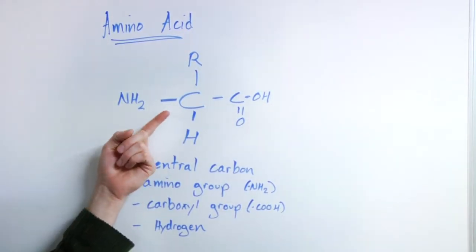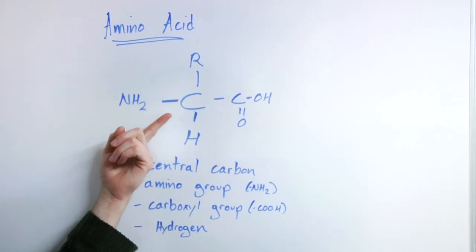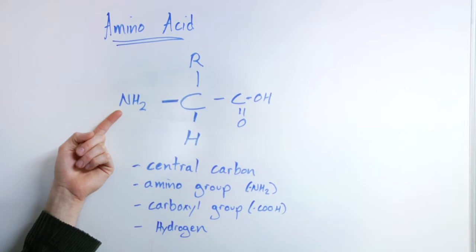First, you have a central carbon atom that has four different parts around it. You have an amino group, which simply means nitrogen and two hydrogens.